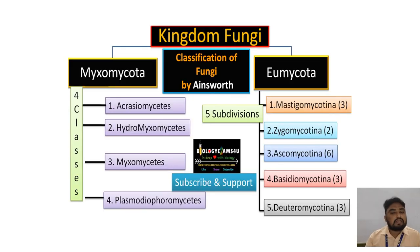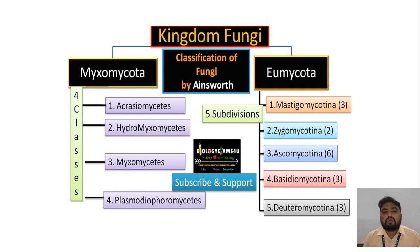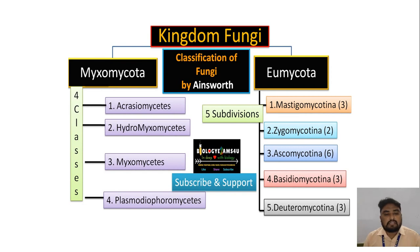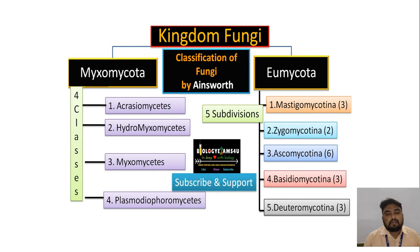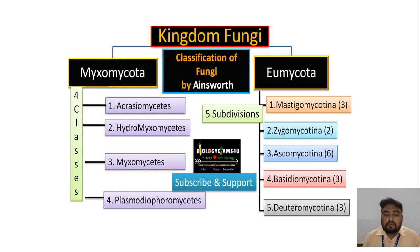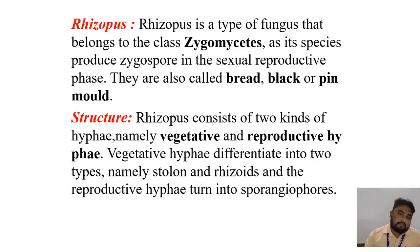This is the Ainsworth classification of fungi. The Ainsworth scientist proposed two types of fungi: Myxomycota and Eumycota. Myxomycota is further divided into four classes: Acrasiomycota, Hydromyxomycota, Myxomycota, and Plasmodiophoromycota. Eumycota has five divisions: Mastigomycotina, Zygomycotina, Ascomycotina, Basidiomycotina, and Deuteromycotina.